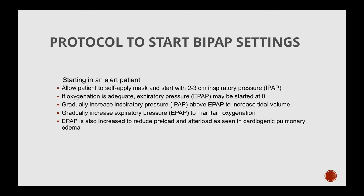Protocol to start BiPAP: start in an alert patient and allow self-application of the mask if possible. Begin with 2–3 cm of inspiratory airway pressure; if oxygenation is adequate, expiratory pressure may start at zero. Gradually increase IPAP above EPAP to increase tidal volume. Gradually increase EPAP to maintain oxygenation. EPAP is also increased to reduce preload and afterload, as seen in cardiogenic pulmonary edema.